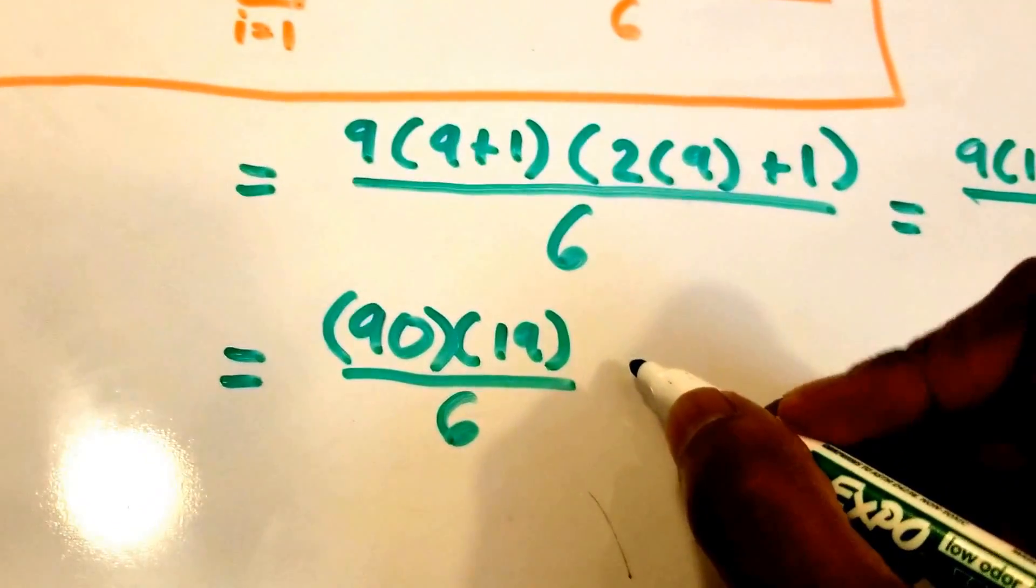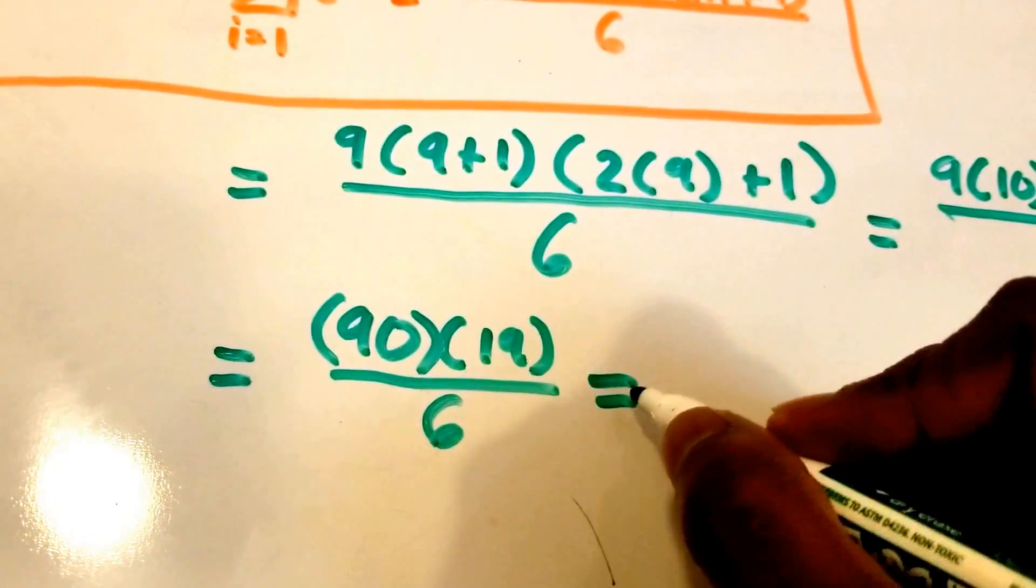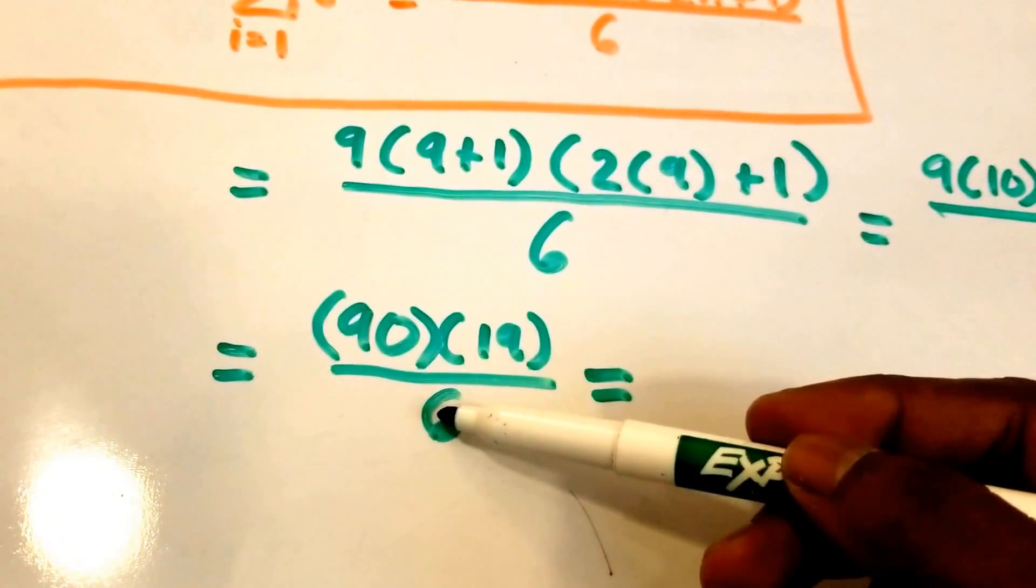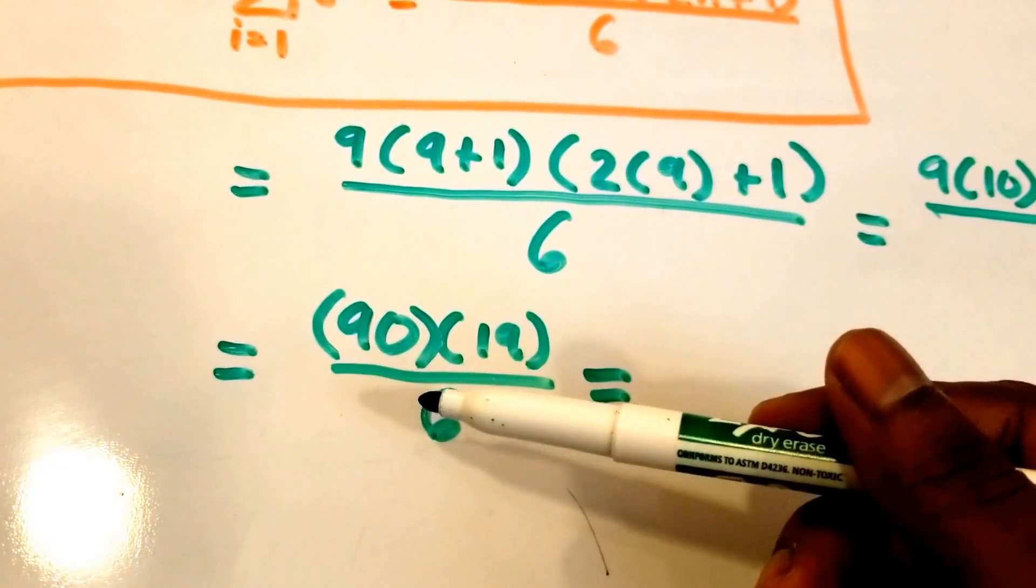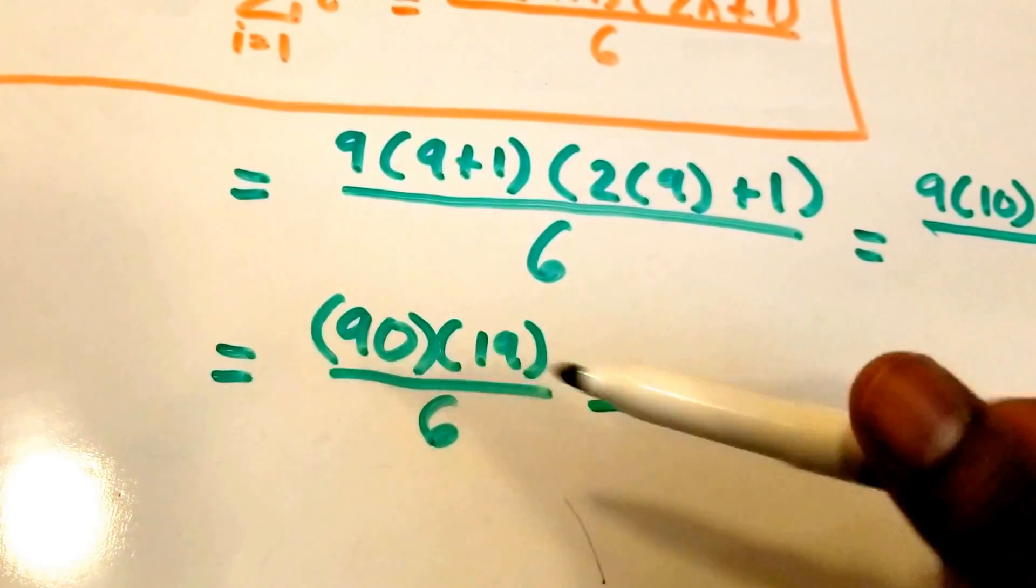Okay, and let's see. So what does this equal? I'm probably going to divide the 90 by 6, so 6 can go into 90 I believe 15 times.